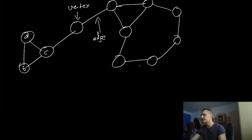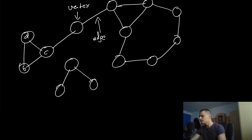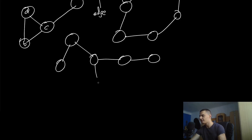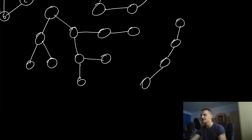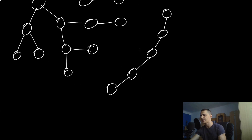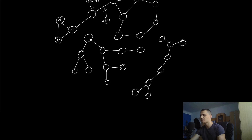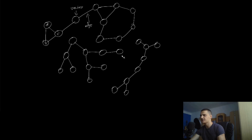One thing worth mentioning: if you don't have any cycles in a graph, it is called a tree. If you have something like this where it goes on and on without any cycles — meaning you can never go full circle — this is called a tree. A path is when you always have only one direction to go. You can always pick a root node and it's just a tree, like binary trees.